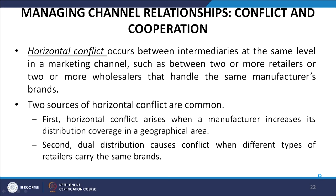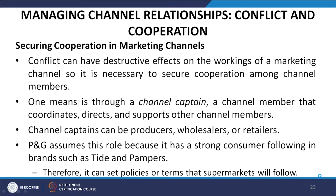Horizontal conflict occurs when intermediaries at the same level in a marketing channel — such as two or more retailers or wholesalers — handle the same manufacturer's brand. There are two sources of horizontal conflict: first, it arises when a manufacturer increases its distribution coverage in a geographical area; and second, dual distribution causes conflict when different types of retailers carry the same brands.